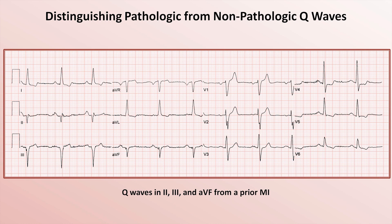The Q-wave in AVF is of slightly different morphology, as it is arguably either a notched Q-wave or actually a tiny Q followed by a tiny R followed by a large S. Even if the actual Q component of the overall QRS complex in this lead were very small, it would still be appropriate to consider it pathologic, given both its context within its own QRS complex as well as its context within the other inferior leads.